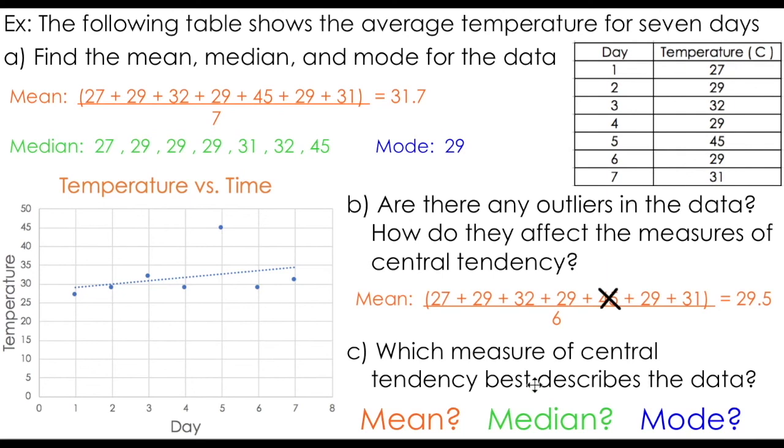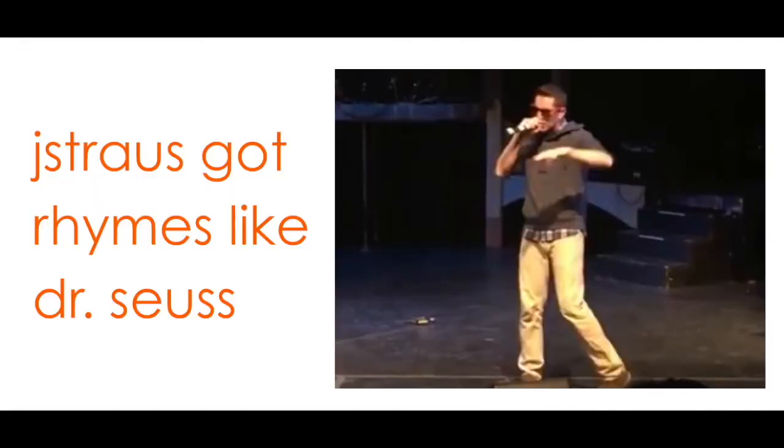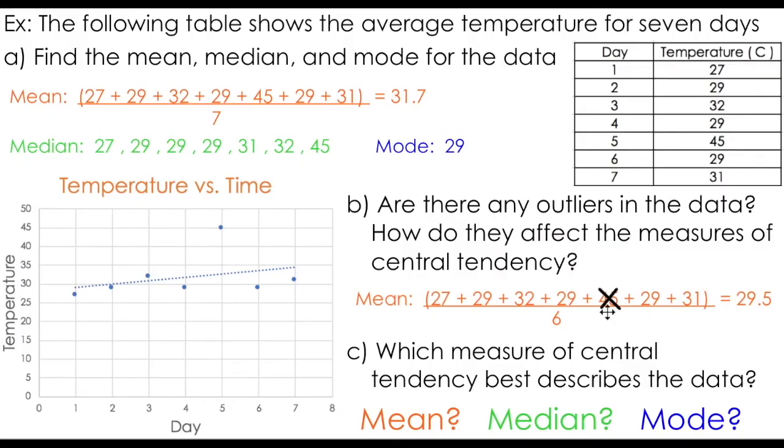So after this analysis, we can ask ourselves the question, which measure of central tendency best describes the data? While most people usually lean on the mean, we've shown here that in this case, this 45 degree outlier actually inflates our average, so we can rule that one out. The median and the mode are both equal in this case, so I would argue either of these is actually a better representation of the patterns involved in this data.